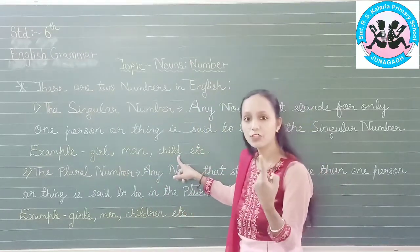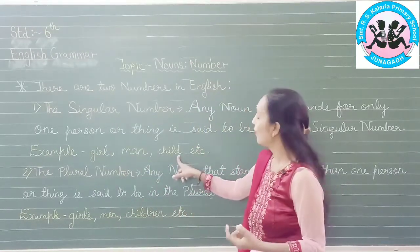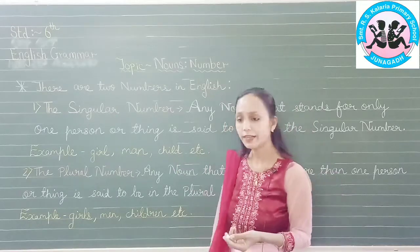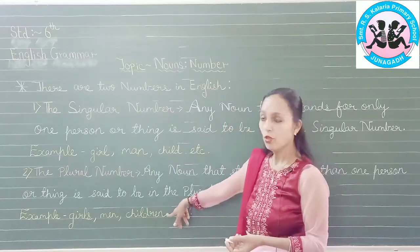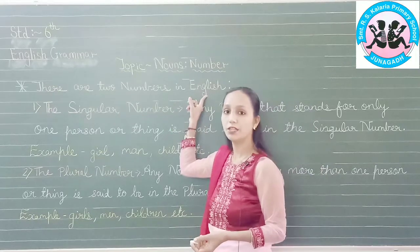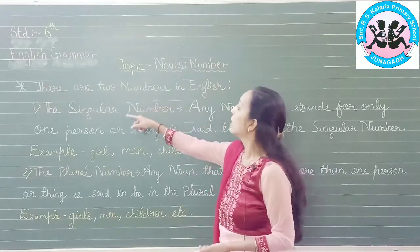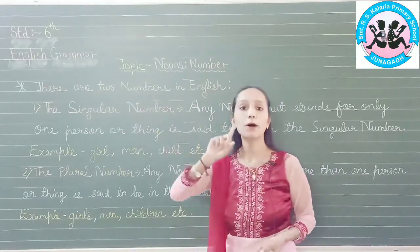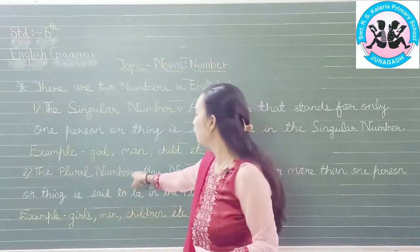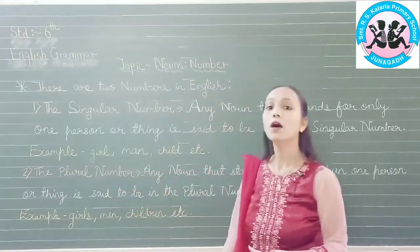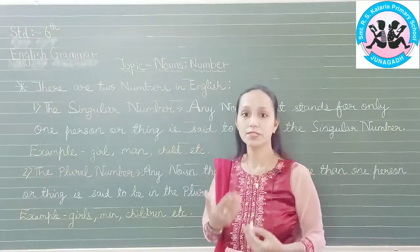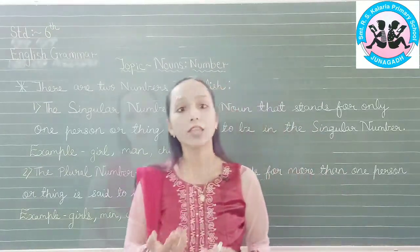Child — one child. When we talk about more than one child, it becomes children. So remember there are two numbers in English: singular number, when we talk about one person or thing, and plural number, when we talk about more than one person or thing.